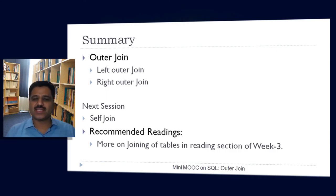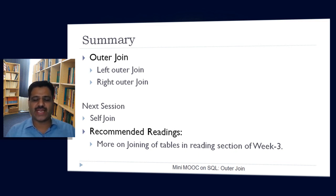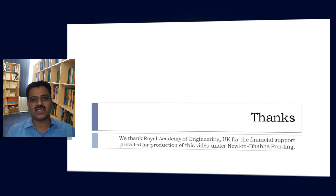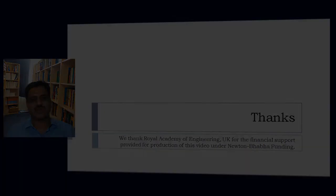Let us summarize the concepts learned in this session. We have learned about outer join and its two types: left outer join and right outer join. In the next session we will learn self join. You can read more on joining of tables in the reading section of Week 3. Thanks for watching this video.